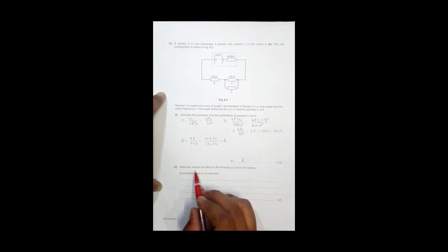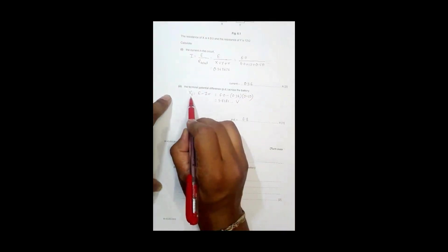Equal to 8, so R equal to 8 ohm. Now state and explain the effect on the terminal PD across the battery. So previously the terminal PD was this Vt is equal to 5.8 volt. Now what is happening here is when I add something here in parallel...